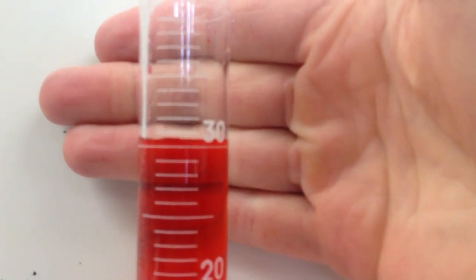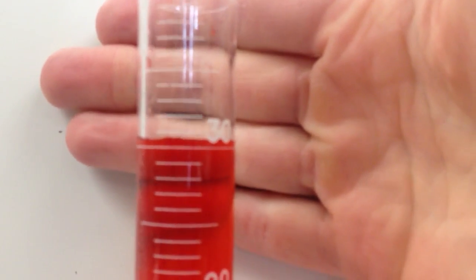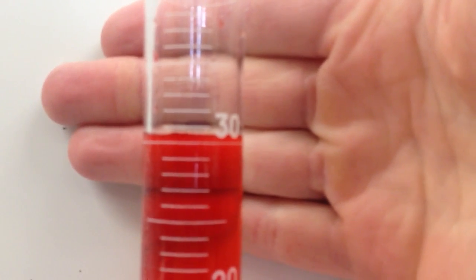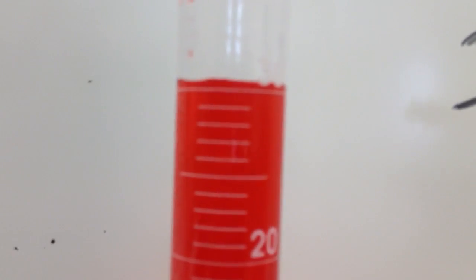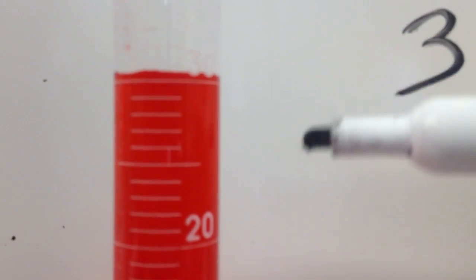So let's look at my water level. My water level, see the meniscus or the top of my solution, it's more than 30 but less than 31. So I can estimate the difference between those. It's hard to tell in the video, but I'm going to say it's about 6 tenths of the way to the 31. So I'm going to say that that is 30.6 milliliters.